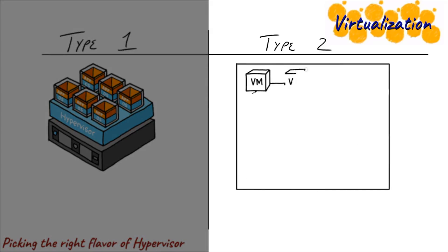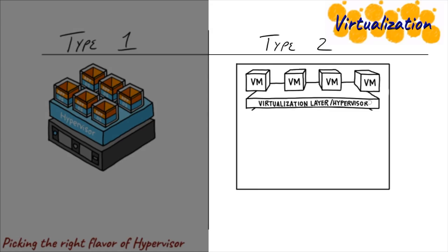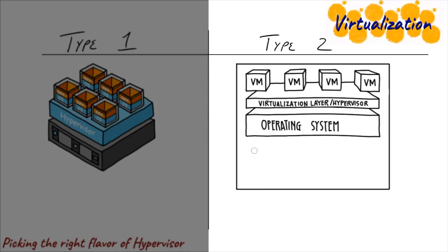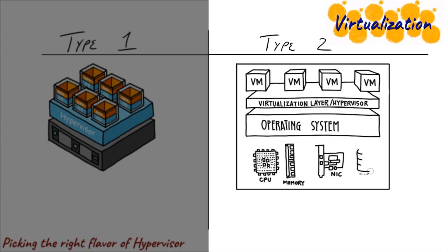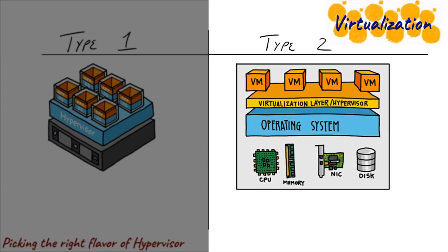In a type two hypervisor, what's bare metal installed onto the physical hardware is an operating system — a multifunction OS with many purposes. On a desktop it might also run Word or a browser; on a server it might be a web server. Then someone decides they want to perform virtualization on that box, so they install an application or service — only in this case, that application or service is the hypervisor.